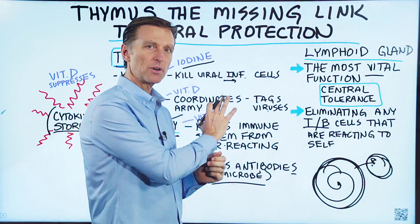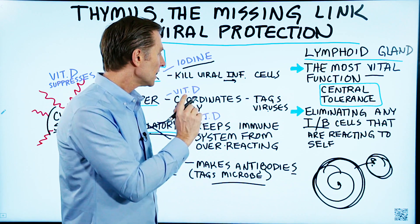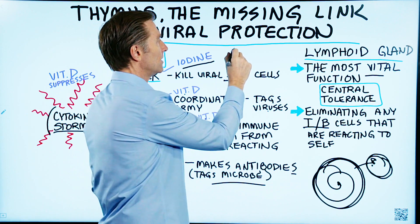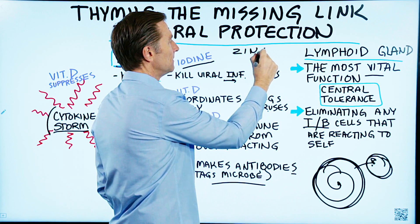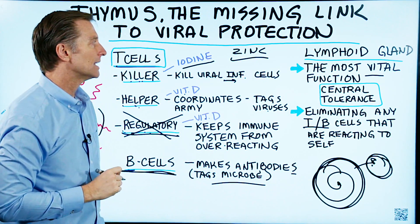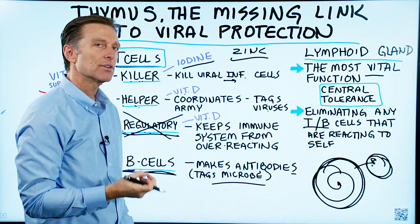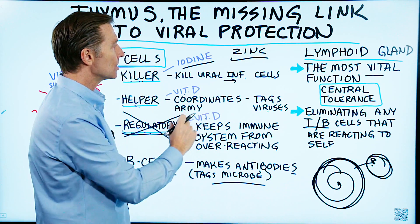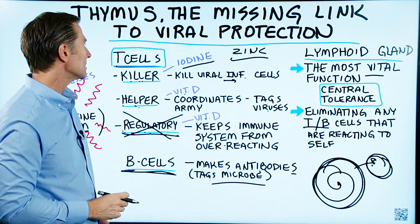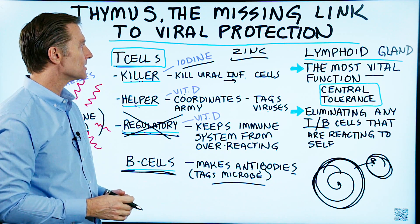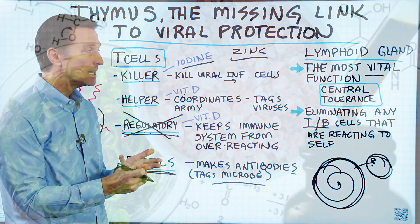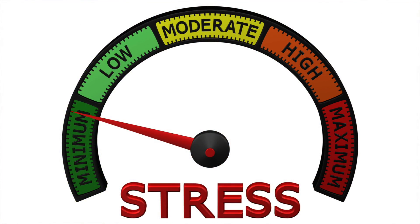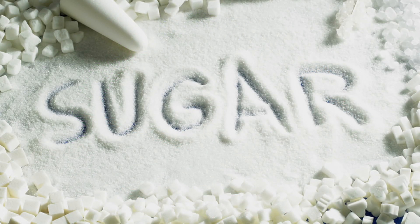That gives you a summary of what the thymus does. It's not just about vitamin D — it's also about zinc. If you're deficient in zinc, you get atrophy of your thymus gland; it shrinks and you lose all these functions. What's really important to support the thymus is zinc, vitamin D, iodine, keeping your stress low, and of course avoiding sugar.